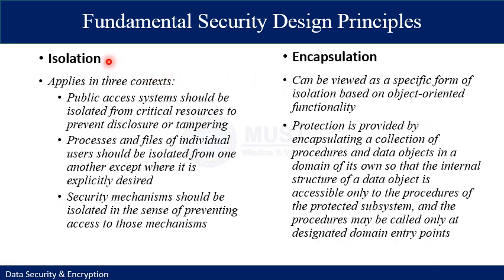Another important fundamental security design principle is isolation, which works in three contexts: public access, processes, and the security mechanism. First, public access systems should be isolated from critical resources to prevent disclosure or tampering. Your public access system must be different from your critical access system — the more critical the data, the more secure the server should be. Where sensitivity or criticality of information is high, organizations may want to limit the number of systems on which data is stored and isolate them. For example, secure data can be moved to a private server while less critical data remains on the public server.